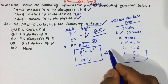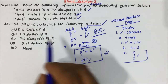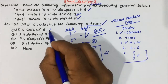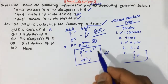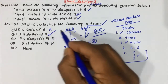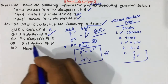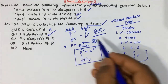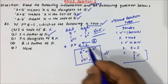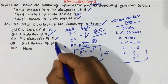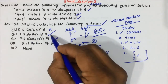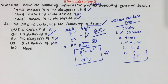Now using the tree, we evaluate the options. 'S is wife of Q' — no, S is husband of Q, so this is wrong. 'S is father of P' — yes, this is correct. 'P is daughter of Q' — P is not daughter, P is son of Q. 'Q is father of P' — Q is mother of P, not father. So only option B, 'S is father of P,' is the correct answer for Question 1.